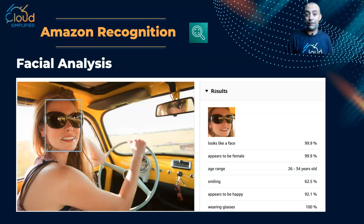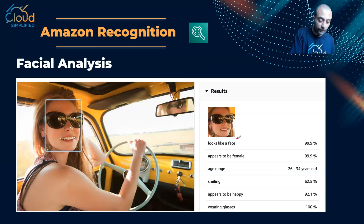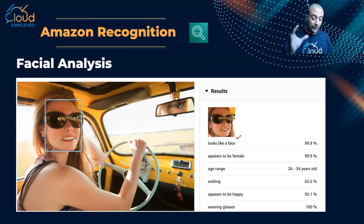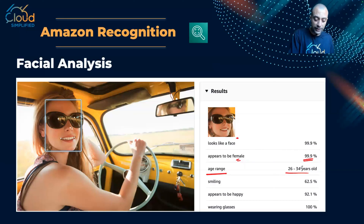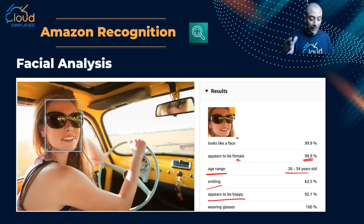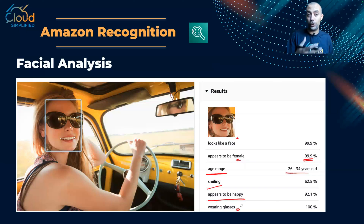Let me give you some examples from the AWS console. Using facial analysis, I uploaded an image and Rekognition identified the face. It detected it appears to be female with almost 99.9% confidence. It also detected an age range of 26 to 34 years old, that the person is smiling — so the sentiment is happy — and that they are wearing glasses.